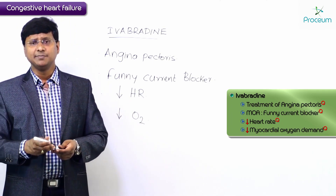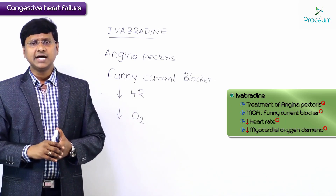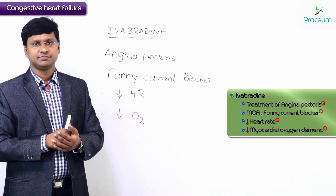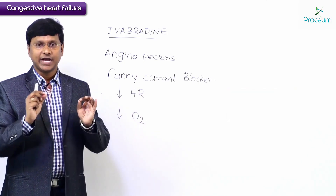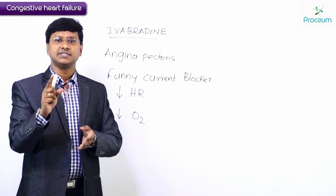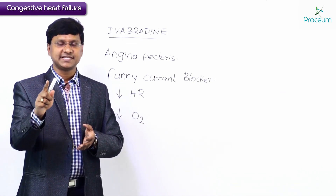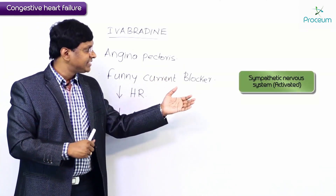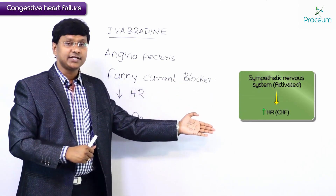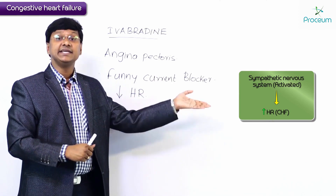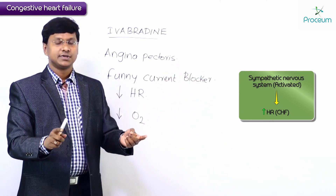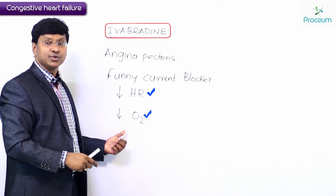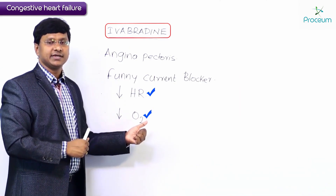A common question is: in patients with congestive heart failure where the heart is not pumping well, won't reducing the heart rate be a disadvantage? The answer is no. As part of the compensatory mechanism in CHF, there is activation of the sympathetic nervous system, which increases the heart rate. So giving ivabradine reduces heart rate and oxygen demand by causing bradycardia.